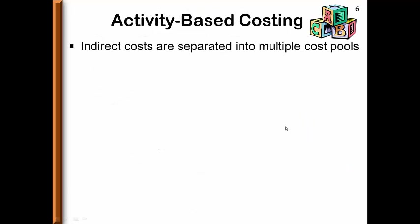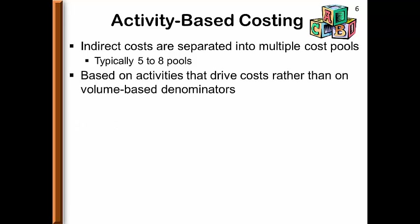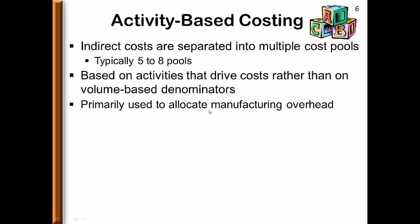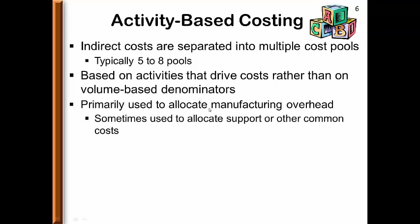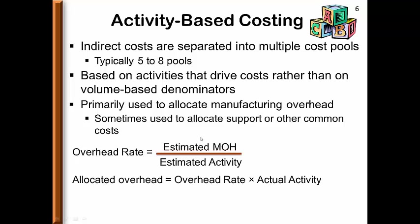Under activity-based costing, we separate the indirect cost into multiple cost pools. There are typically five to eight cost pools in an ABC system. The pools are based on activities that drive the cost in each pool, rather than the volume-based denominators used with simple costing. This method is primarily used to allocate manufacturing overhead, though some companies use it to allocate support or other common costs. In determining the rates, we use the same type of formula, but there will be multiple rates and multiple allocations.